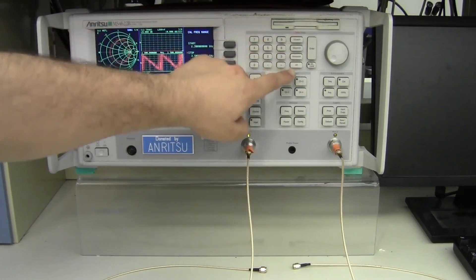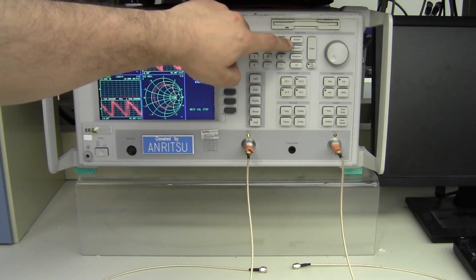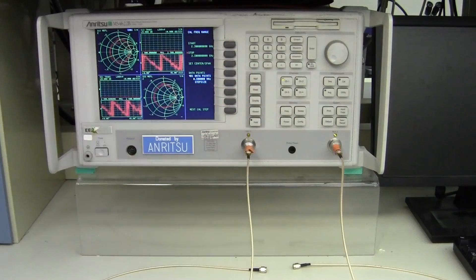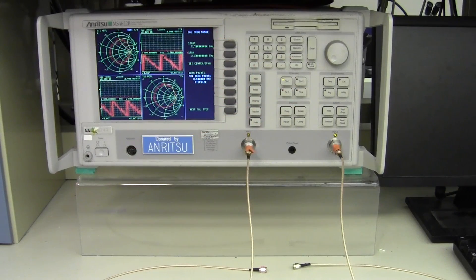On the number pad on the right, it has order of magnitude buttons for gigahertz, megahertz, and kilohertz. You do need to be careful that as you're typing them in, you never have your stop frequency be lower than your start frequency because the vector network analyzer will complain.